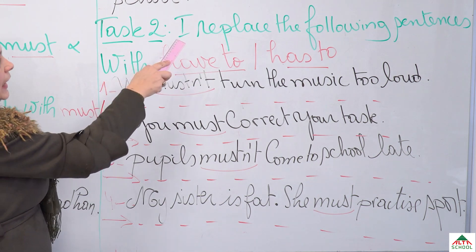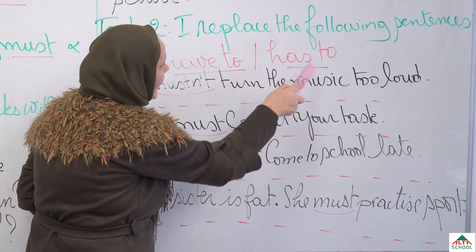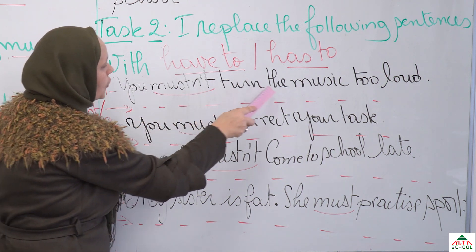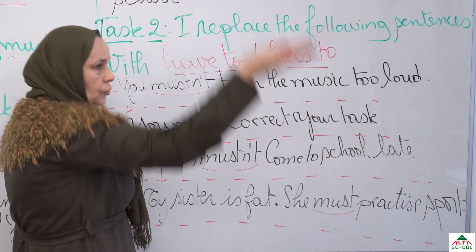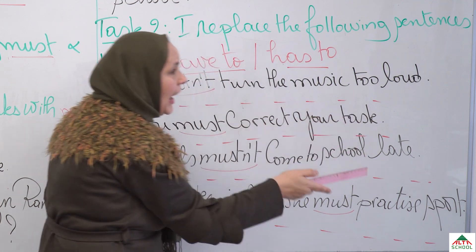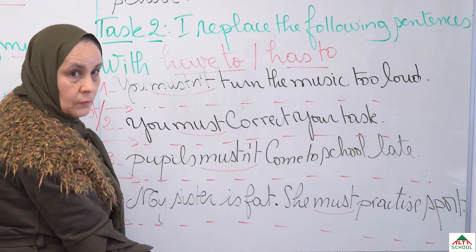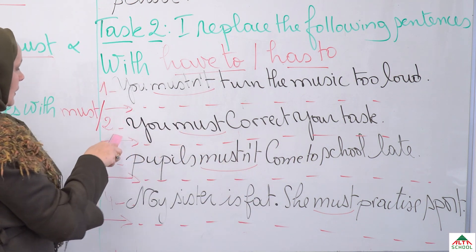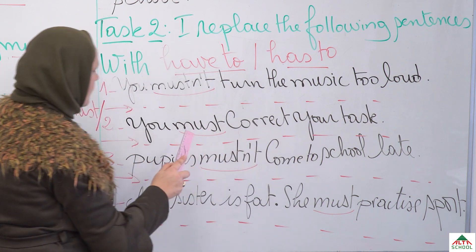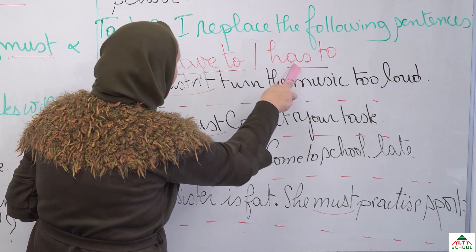Task two: replace the following sentences with have to or has to. The first sentence: 'You mustn't turn the music too loud.' The second: 'You must correct your task.' You replace must or mustn't with have to or has to.